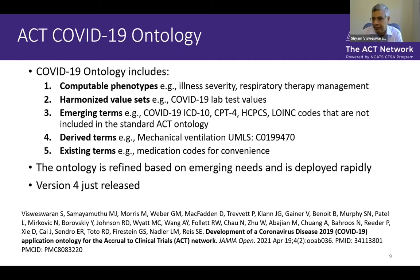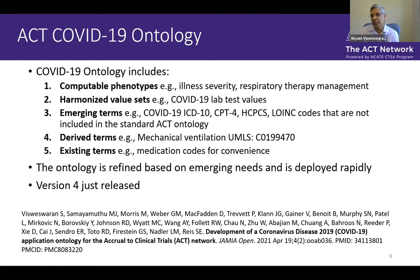The second area was harmonized value sets, especially for lab tests. Initially we had a lot of antigen lab tests for diagnostic purposes, and now antibody lab tests are coming online. The values returned from these lab tests were all over the place, so we established a four-value set and asked sites implementing the COVID ontology to map all their values to these four canonical values. This turned out to be very useful for research.